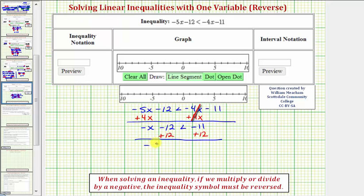So we have negative x, and then this is negative 12 plus 12 is zero. So we have negative x is less than negative 11 plus 12, which is equal to positive 1.